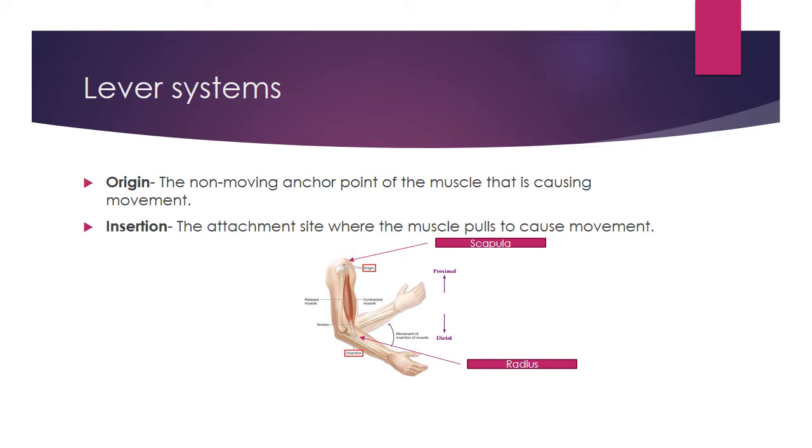The origin refers to the non-moving anchor point of the muscle that is causing the movement. So if we look on the diagram, we can see at the top here the biceps muscle are attached to the scapula. That's why it's important that we know these bones near the collarbone. And that is the non-moving part of where the muscle is attached.